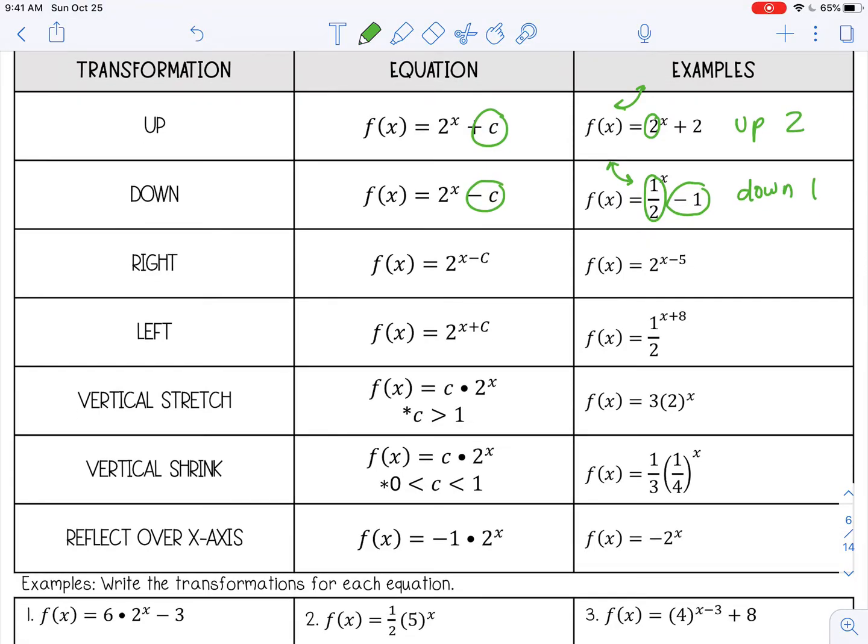If you want to move an exponential function right, you subtract from the exponent x. So it's a little bit backwards. You think right would be adding, but it's actually subtracting. So here I would move right 5. And then left, you add to the exponent. So here I would move left 8.